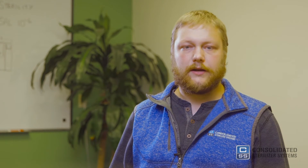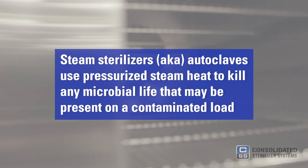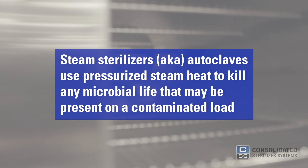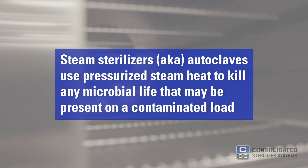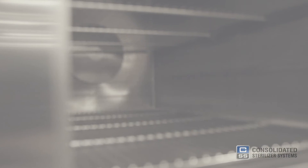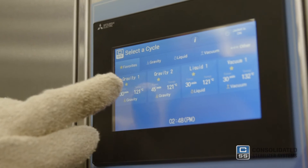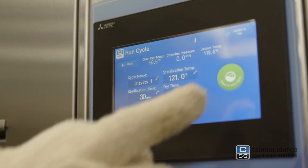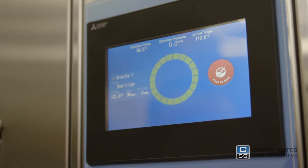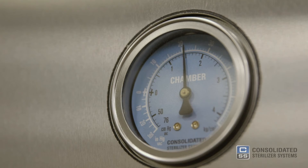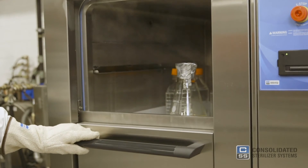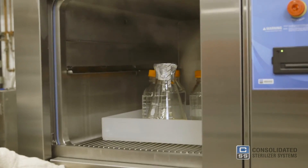Now let's talk about how steam sterilizers work. Steam sterilizers, also known as autoclaves, use pressurized steam heat to kill any microbial life that may be present on a contaminated load. Autoclaves both large and small operate using the same principles as your common kitchen pressure cooker. The door is locked to form a sealed chamber and all air within that chamber is replaced with steam. The steam is pressurized to achieve sterilization. Once a cycle is complete, the steam is exhausted and goods can be removed.